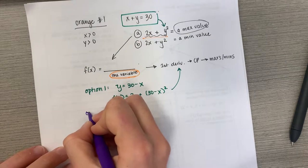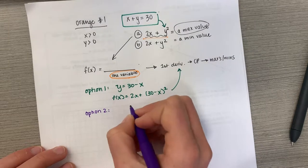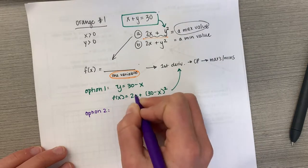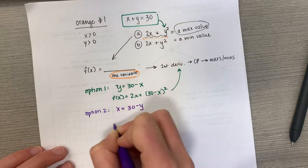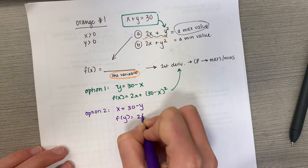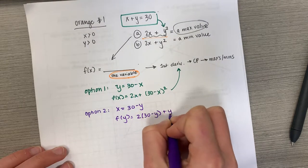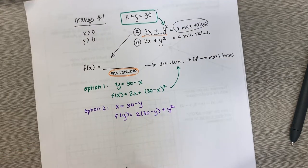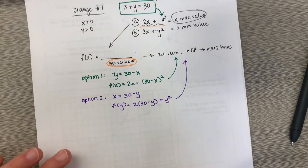Option number two is isolate x and plug in y. x equals 30 minus y. f of y equals 2 times 30 minus y plus y squared. And still do that same process.